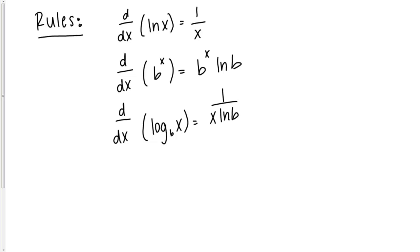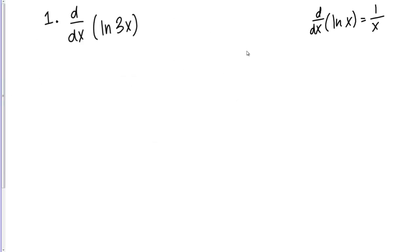We want to use these rules to do a few simple examples. The first one is the derivative with respect to X of the natural log of 3X. I have the natural log of 3X, but it's of the form natural log of X, except instead of having just X inside the natural log, I have a function of X inside. That suggests I'm going to have to use a chain rule to solve this problem.